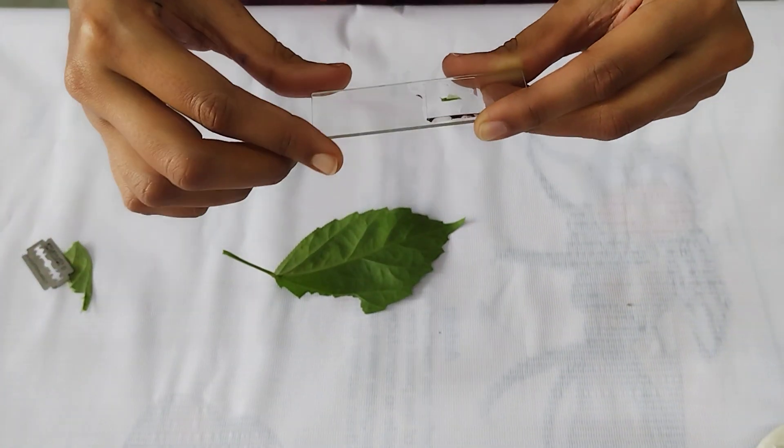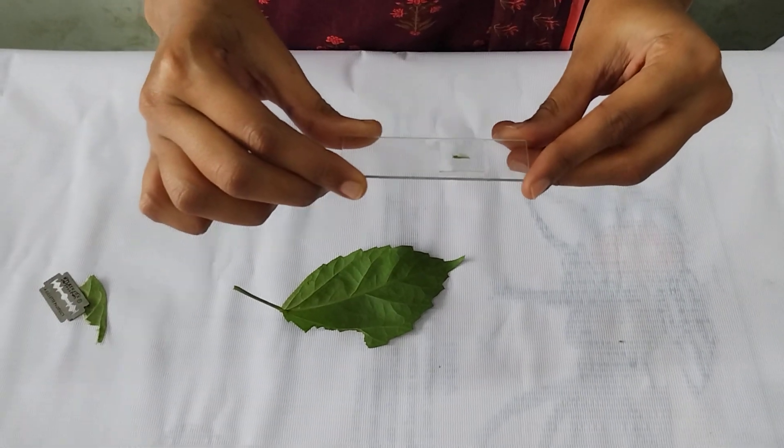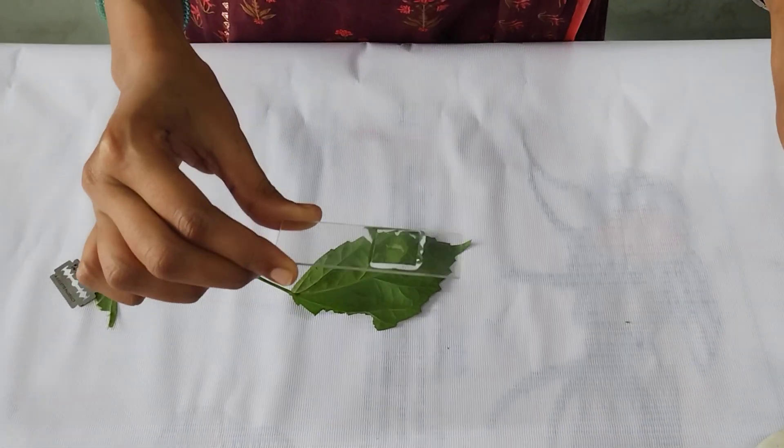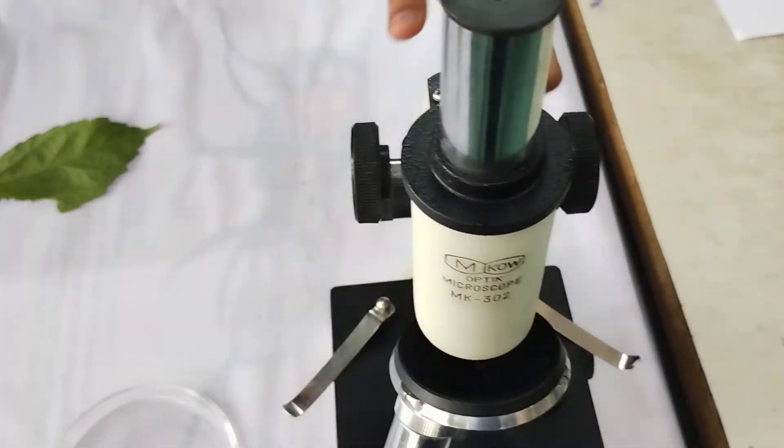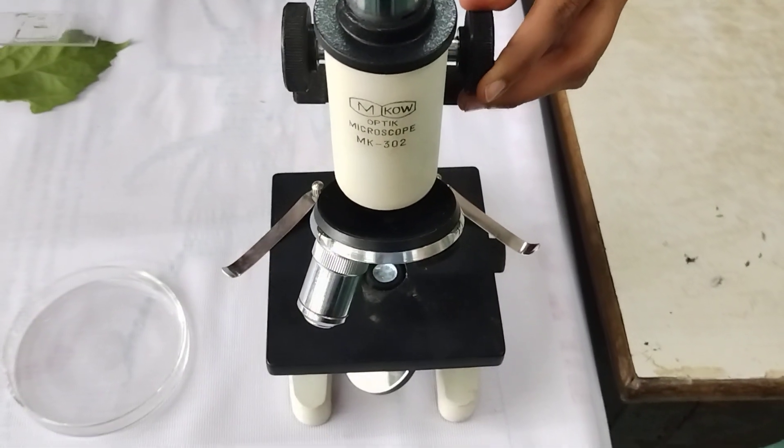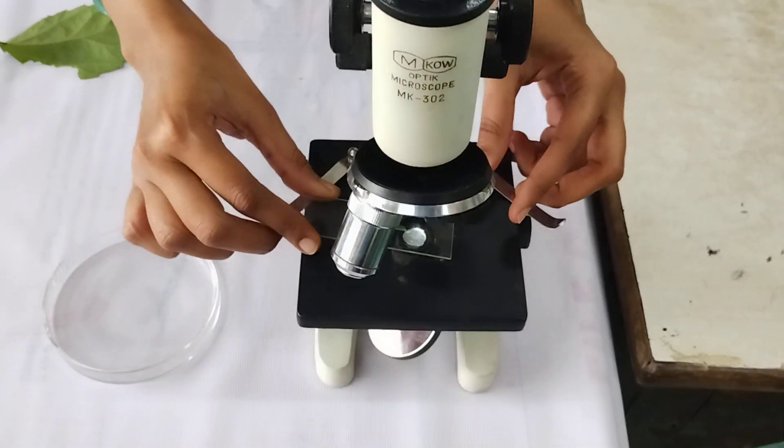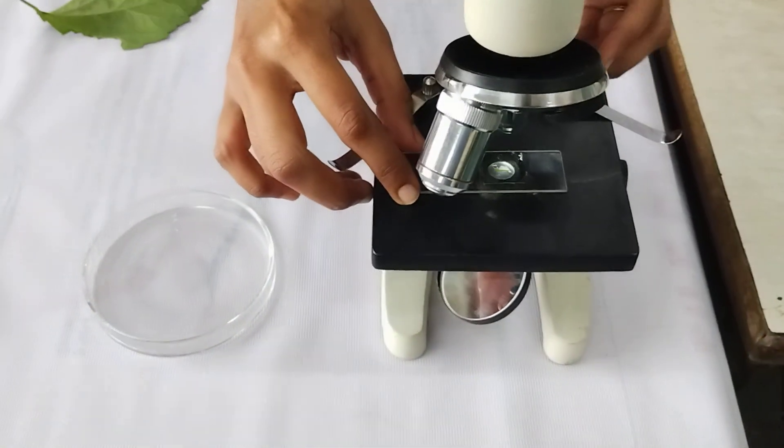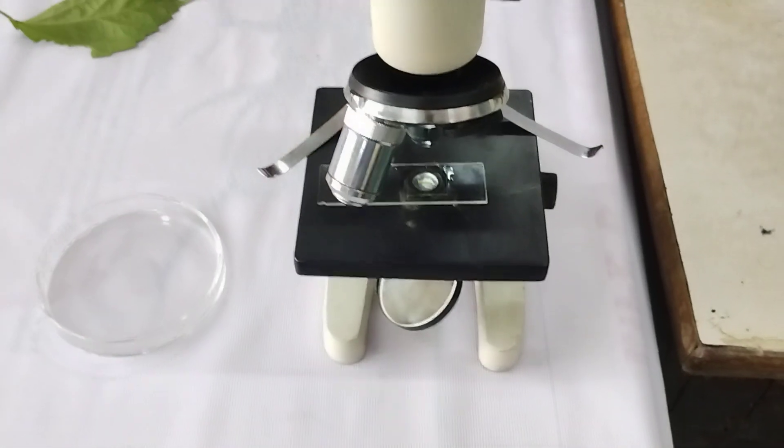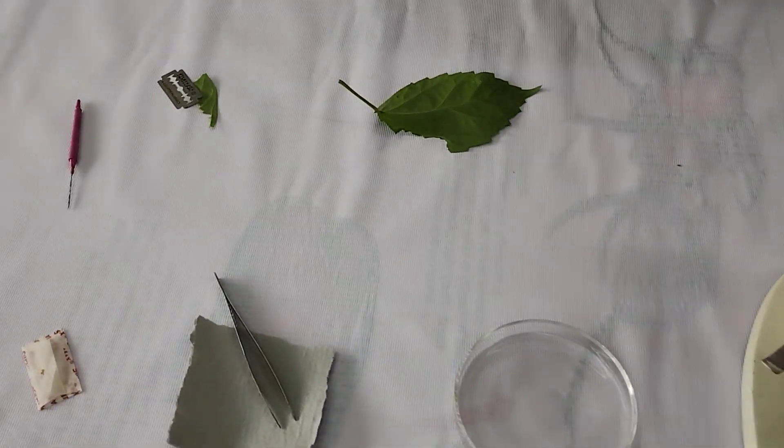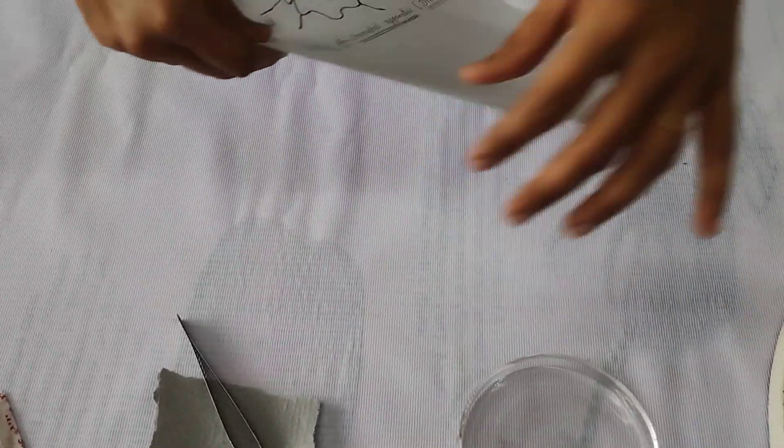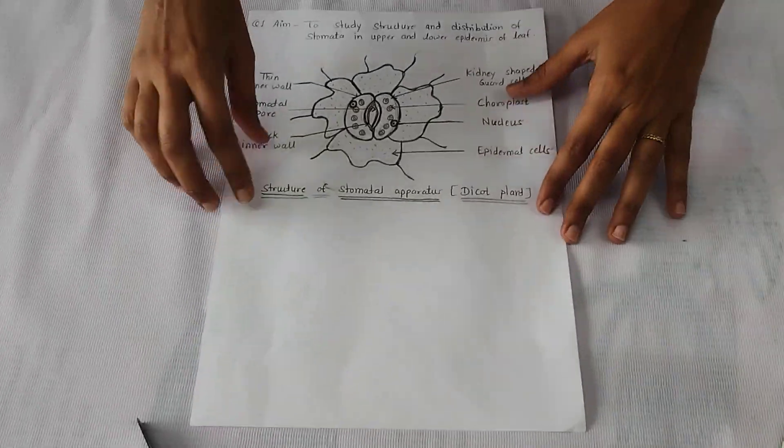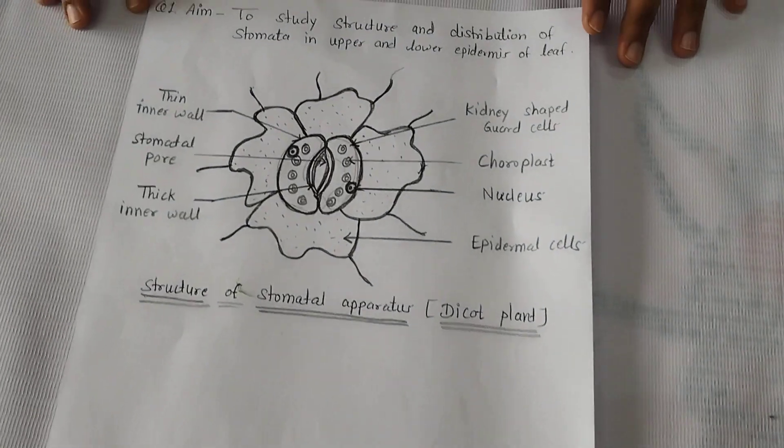Now we are going to observe this slide under compound microscope, and we are using low power objective lens, that is 10x objective lens. The diagram of the dichot stomata is given here.